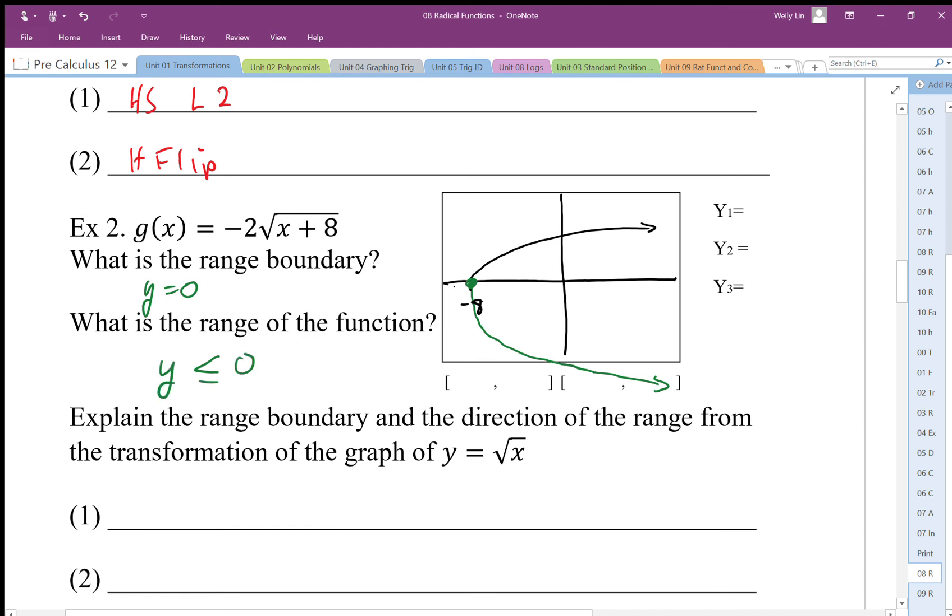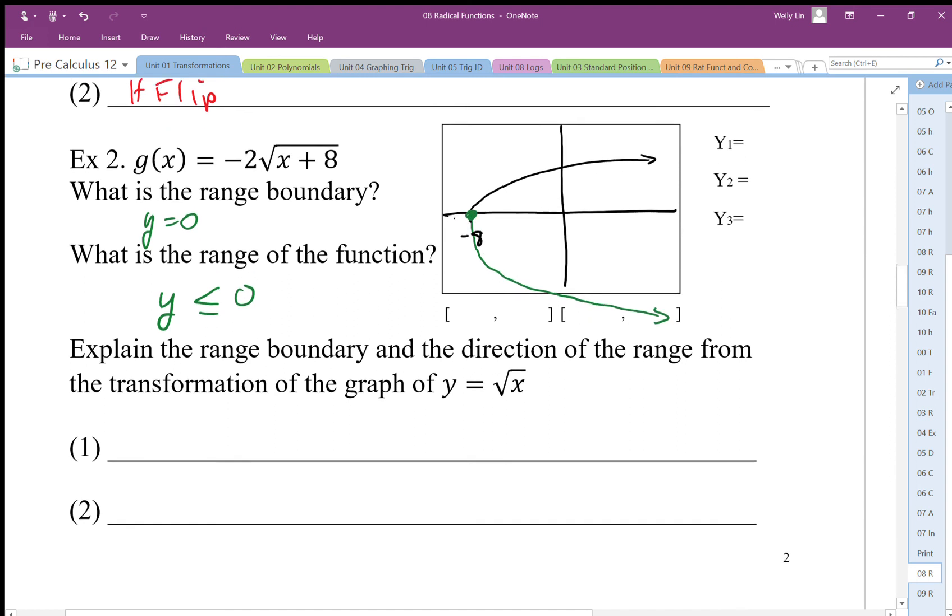So I'm at 0, but I'm gonna go down from 0, and that's gonna be my range. And I can figure that out from my transformation—I flip that graph. We can also kind of think that square roots are always positive. If I multiply it by negative, it's always gonna be negative. So that's another way of doing it.